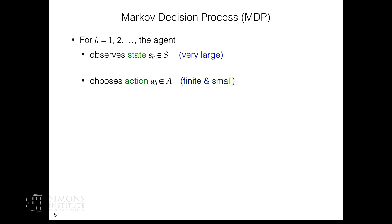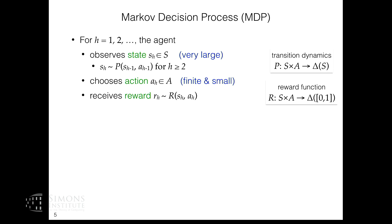After observing the current state, the learner chooses an action A_h from the action space and gets some immediate reward as a function of the current state and action. Then you transition stochastically to the next state S_{h+1} based on S_h and A_h, defined by the transition dynamics. You keep doing this for a number of time steps, which can be finite or infinite.